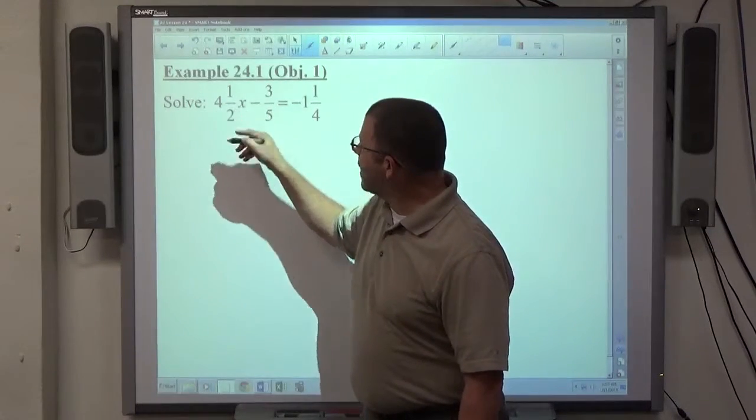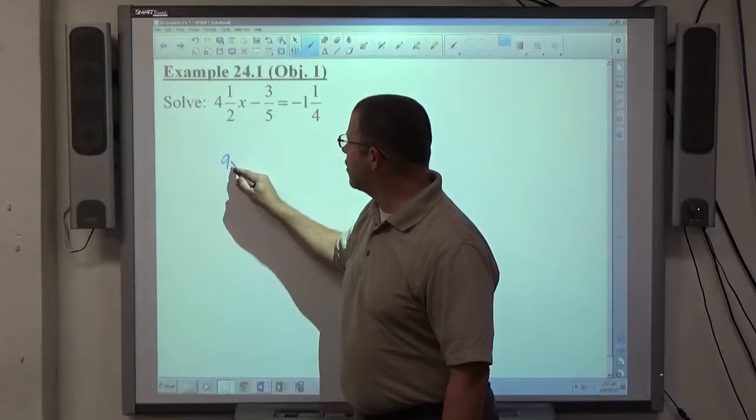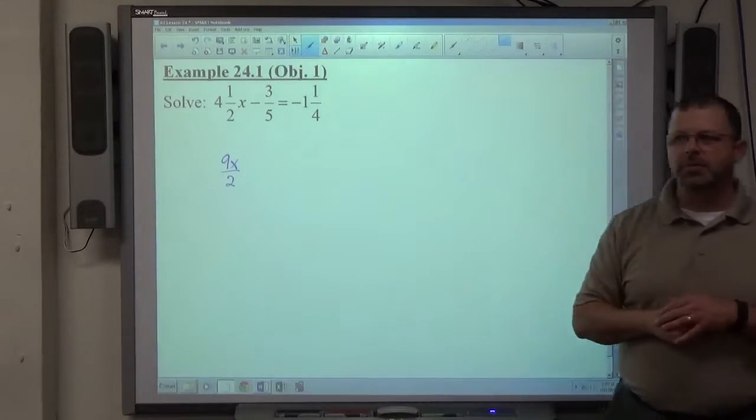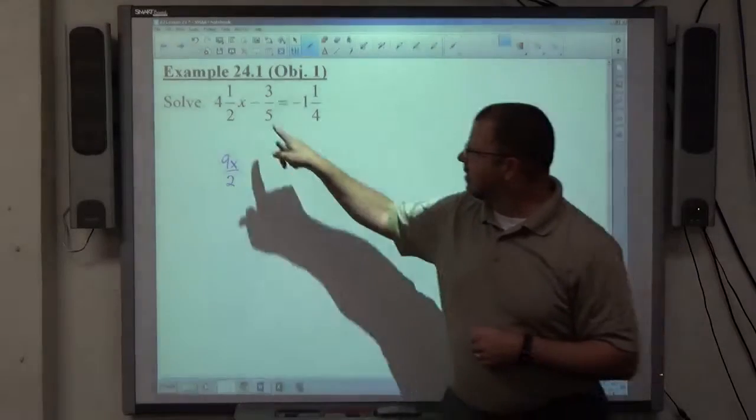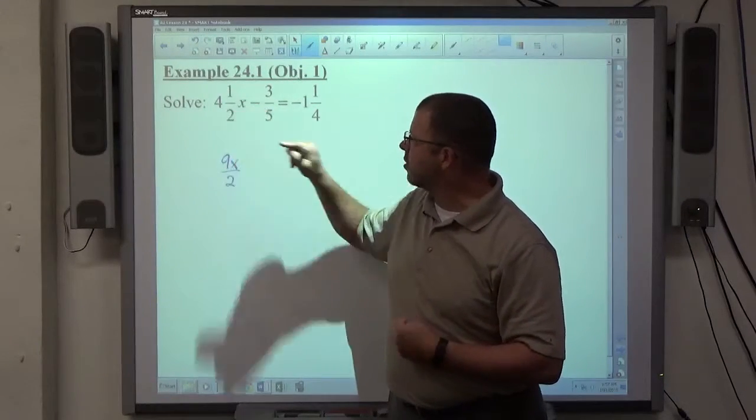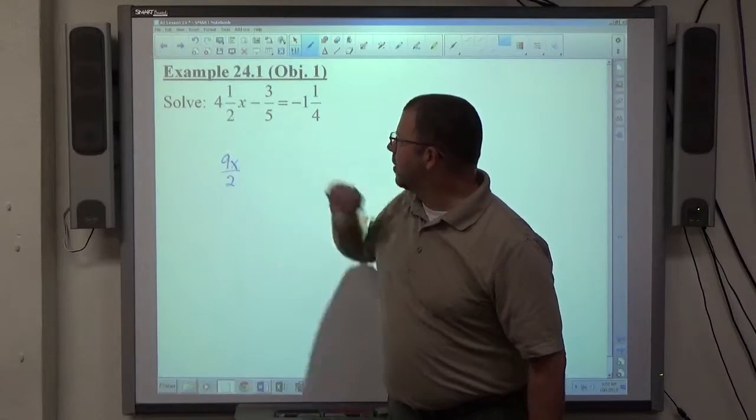So we're going to rewrite this as 9x over 2. I like x's to go on the top if that's where they belong. And since x is off to the side, it's being multiplied as a whole number structure, it actually belongs on the top. 4 times 2 is 8 plus 1 is 9.